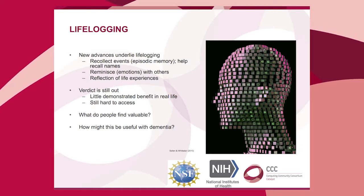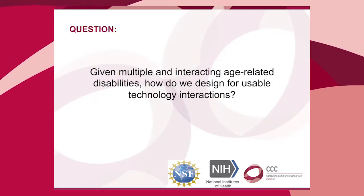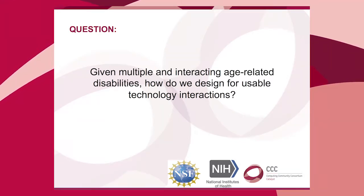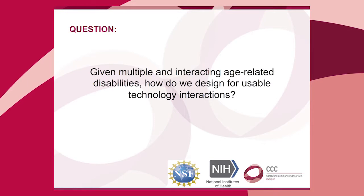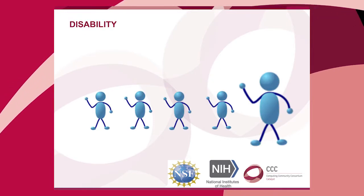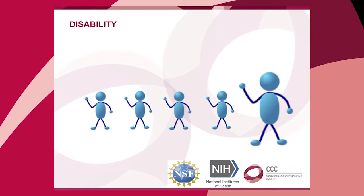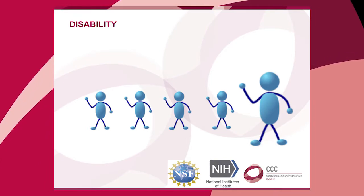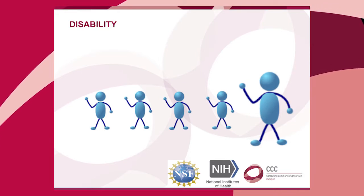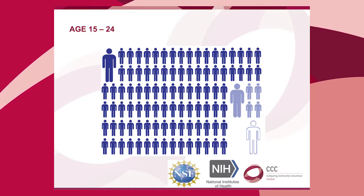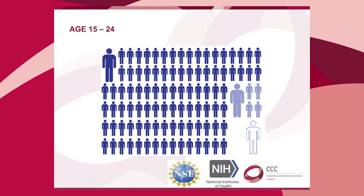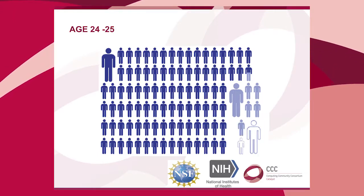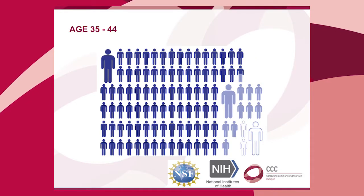In terms of disability, with age you get multiple disabilities and they interact — so how do we provide usable technology for this group? In general, one in five people in this country has a disability, but this clearly interacts with age. For teenagers only a small portion might have a severe disability, but as we go through the decades, more and more people have a disability or impairment of some sort.